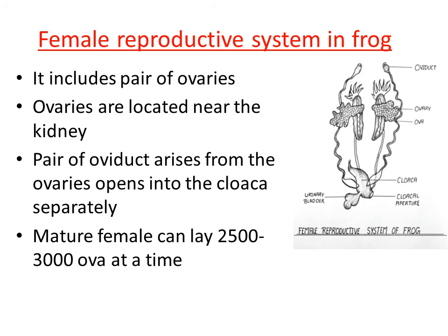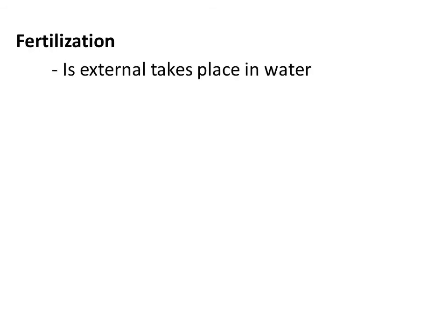Regarding fertilization — where does it occur? The kind of fertilization in frog is external fertilization. The female frog lays eggs in the water and the male frog comes and releases its sperms on the surface of the eggs. Because the fusion takes place in the water, it is called external fertilization. The fusion of male and female gametes happens in the external environment — in the water — so this kind of fertilization is called external fertilization.